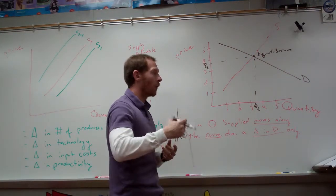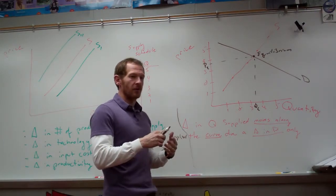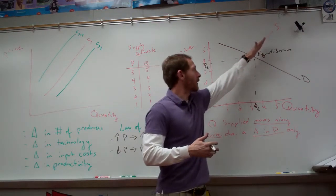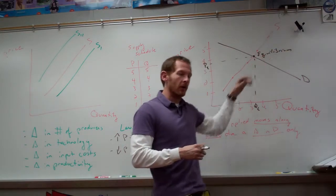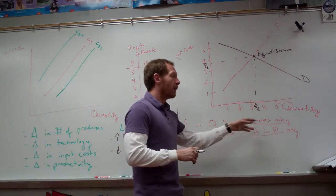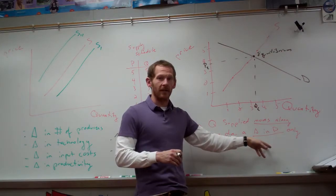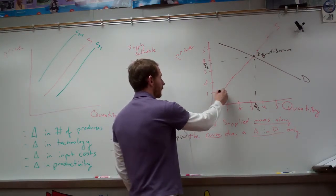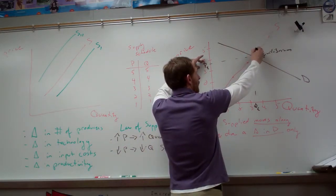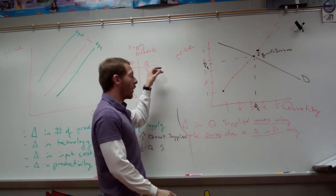Now, can there be a change in quantity supplied? Yes. For instance, for the same thing as change in quantity demanded, it's movement along the curve. So movement along the supply curve happens because of a change in price. Change in quantity supplied moves along the curve only when there's a change in price. So if we're at $1, we're right here, they'll supply one unit. But if they go up to $4, they'll be happy to supply four units. It's moved along the curve, a change in quantity supplied.